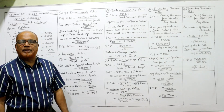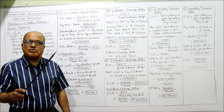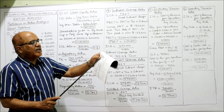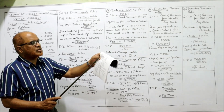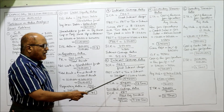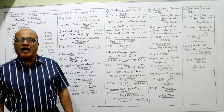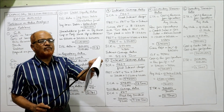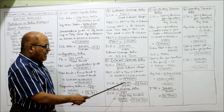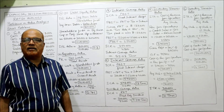PBIT equals PAT plus tax plus interest: 3,00,000 plus 2,52,000 plus 46,000 equals 5,98,000. Fixed interest charges are 46,000. So interest coverage ratio equals 5,98,000 divided by 46,000 equals 13 times.